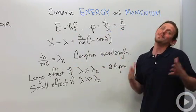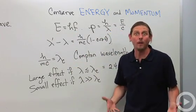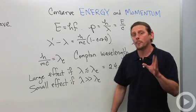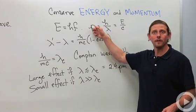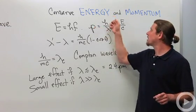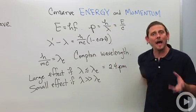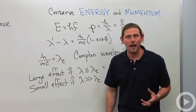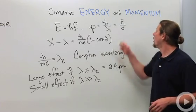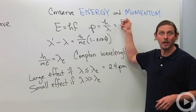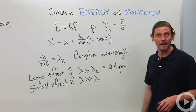We also know, and this actually kind of came from Compton scattering, that the momentum of the photon is given by h over lambda, Planck's constant divided by the wavelength of the radiation. We can also write that as the energy divided by the speed of light in a vacuum.